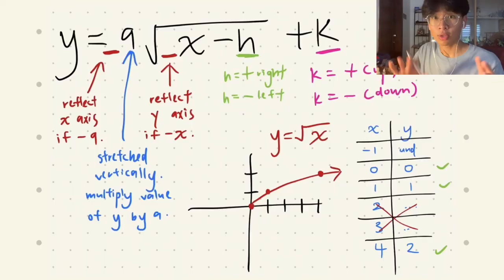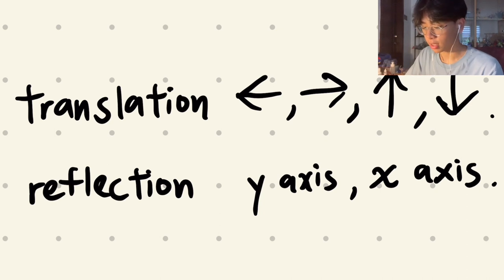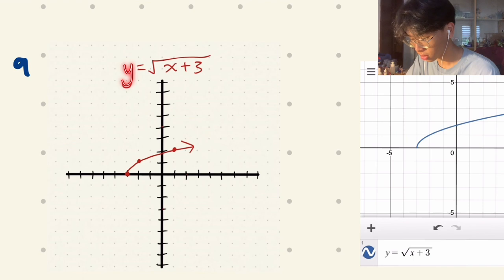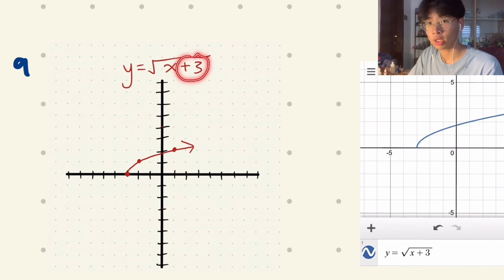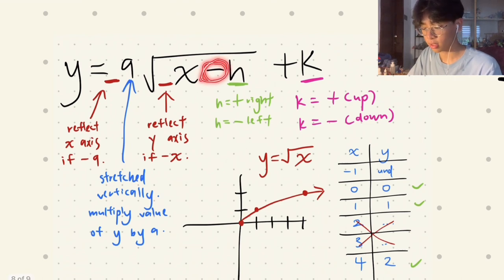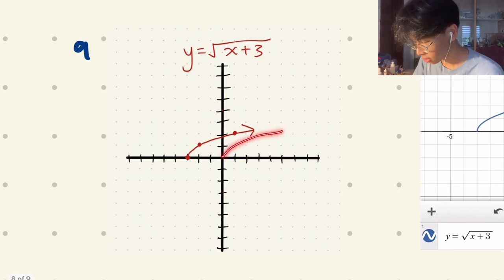Now let's move on to square root functions. The equation is y equals a times the square root of (x-h), plus k outside the square root. We'll look at translation left, right, up, down, and reflections. For question a, y equals √(x+3): inside the square root, plus 3 means h is actually -3, so the graph moves to the left.